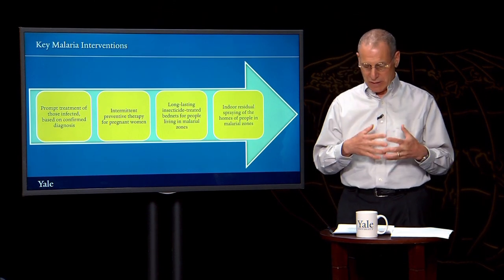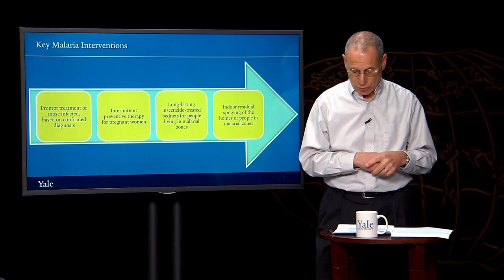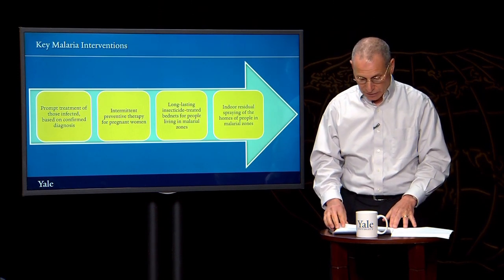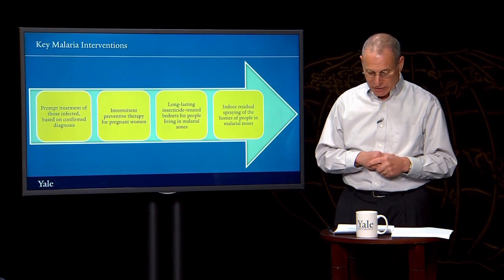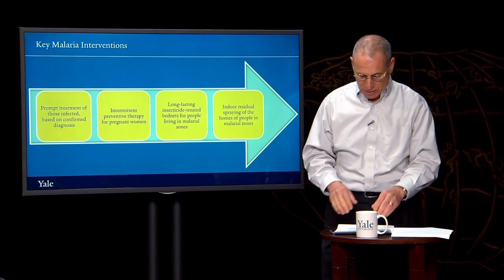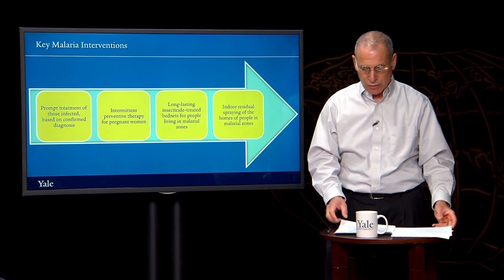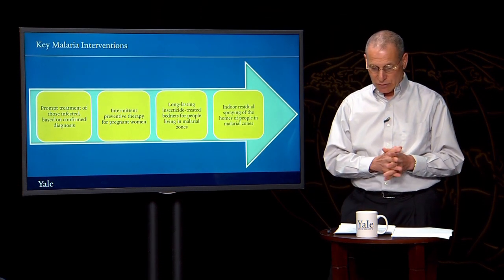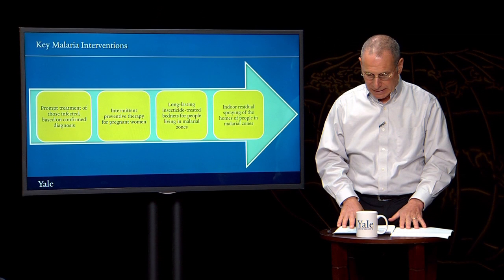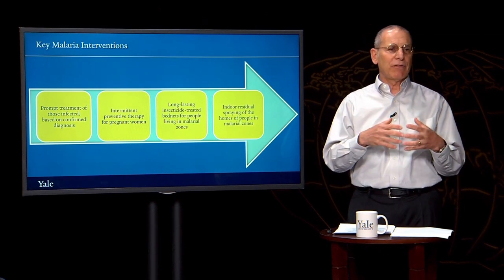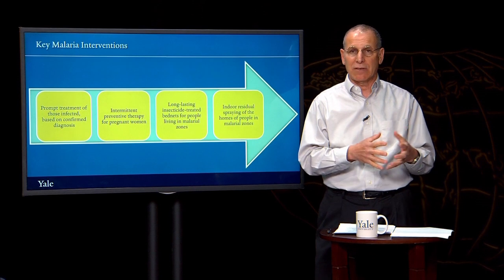The use of these rapid diagnostic kits has also grown enormously, from about 90 million in 2010 to almost 320 million in 2013. The use of long-lasting insecticide-treated bed nets has also grown. It's estimated that over 200 million bed nets were distributed in 2014, which is almost three times as many as were distributed in 2012. Although many people unfortunately still not sleeping under a bed net who should be, the latest estimates are that something close to half of all people at risk are now using long-lasting insecticide-treated bed nets.